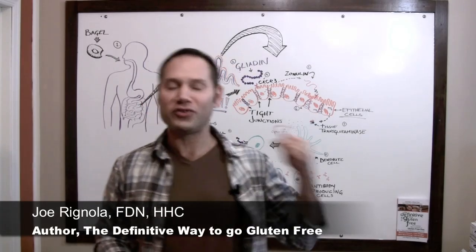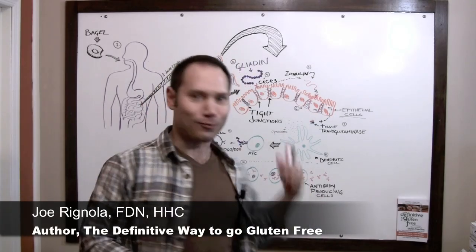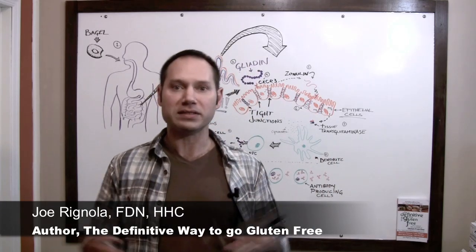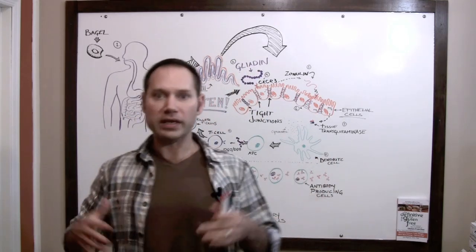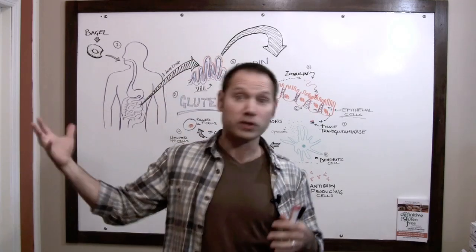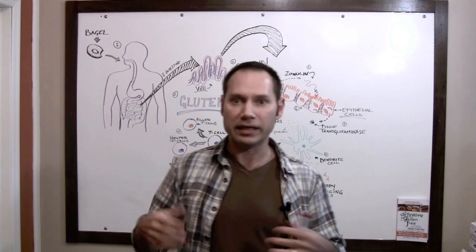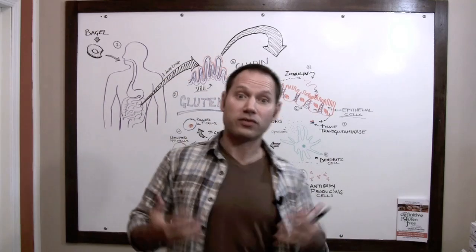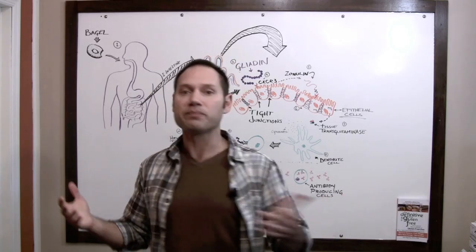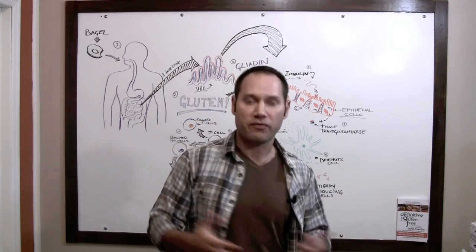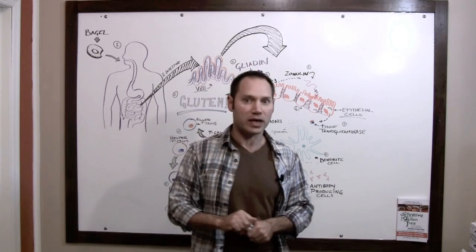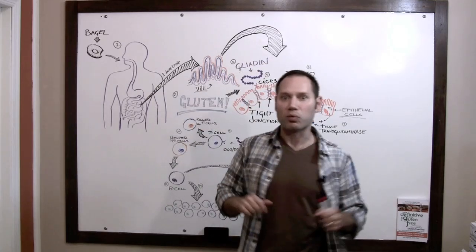Hey everybody, Joe Ragnoli here. As you can see behind me, I've got what looks like a really complicated diagram, but I'm going to do my best to try and break this thing down for you. What this is, is a process from when you have something like a bagel with gluten in it, all the way through your digestive tract and into your immune system. I get asked this question a lot, and I explain this to my clients all the time: how is it that gluten can affect virtually every tissue in my body? So this is the process that goes on. I'm going to jump right in.